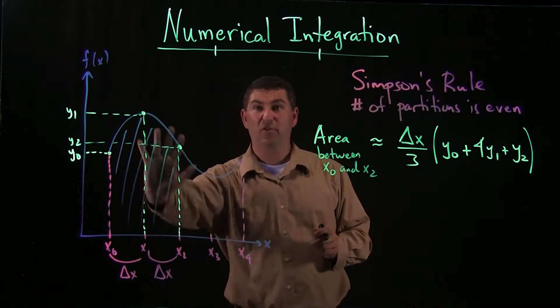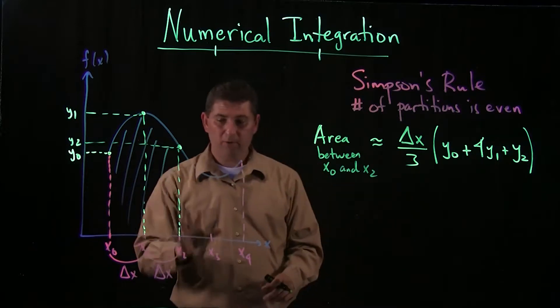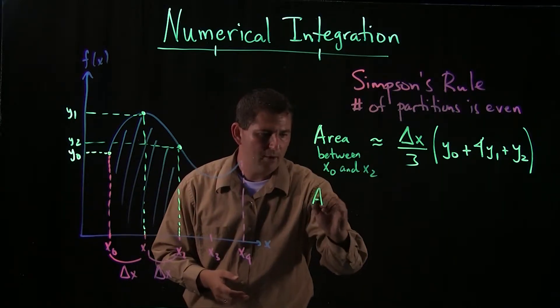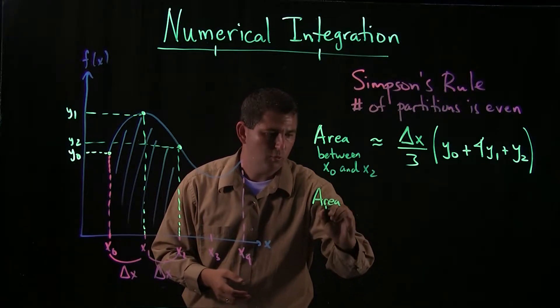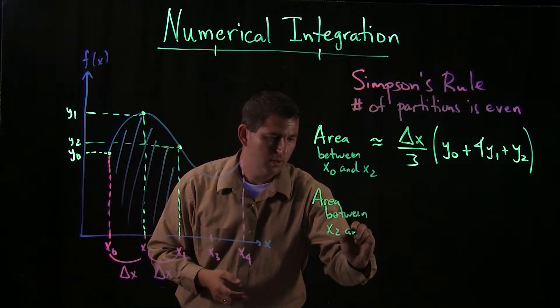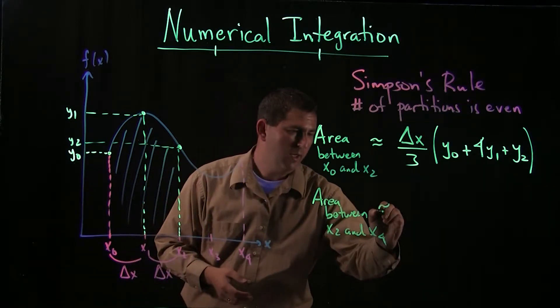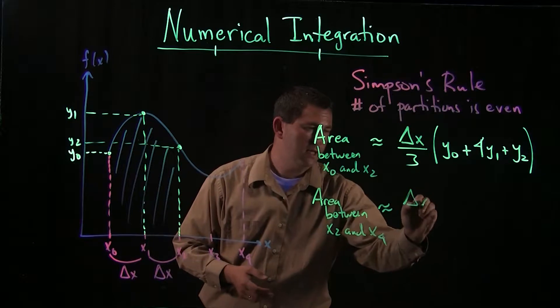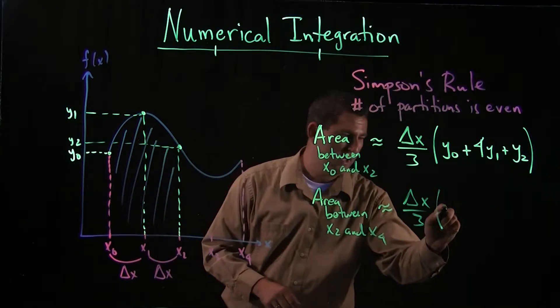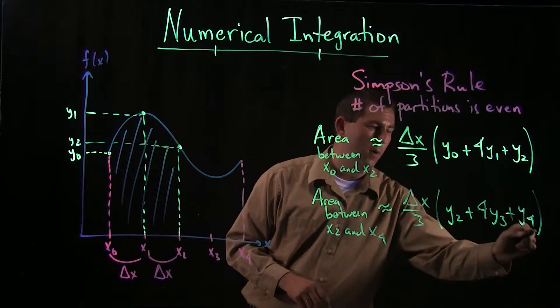Now that only gave me the first side. I still want to do it for the second side. When we do it for the second side, everything works exactly the same. We can write this down: area between x2 and x4. Well, that'll approximately be delta x over three. And now the first one is at x2, so we have a y2, four y3s, and a y4.